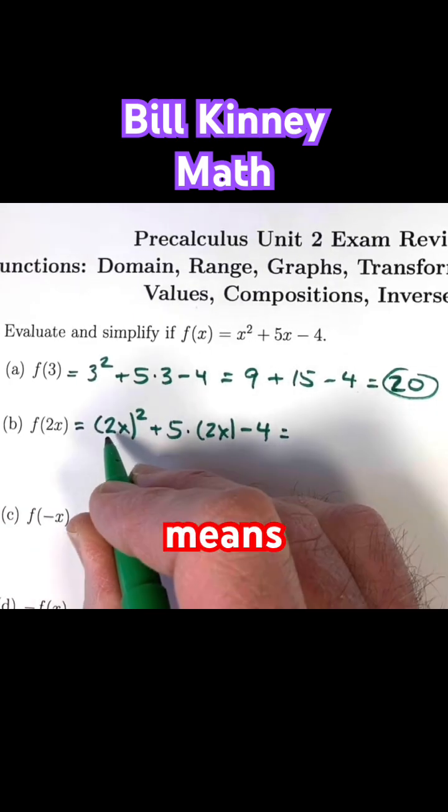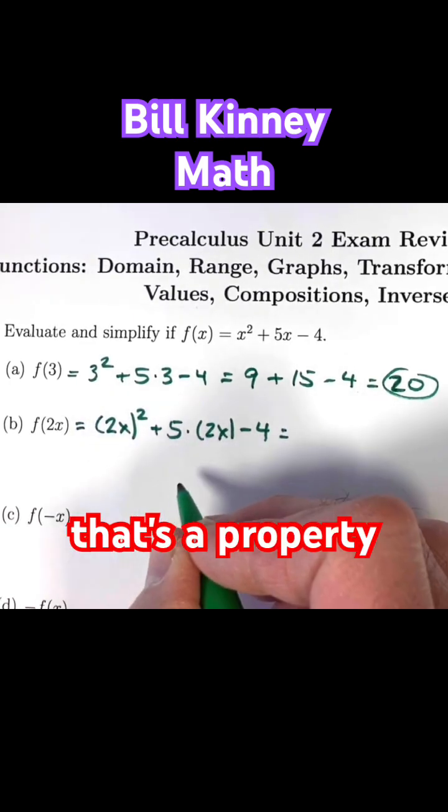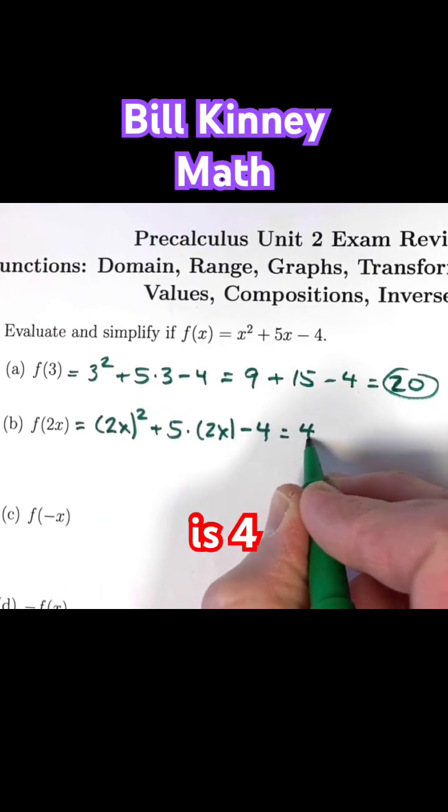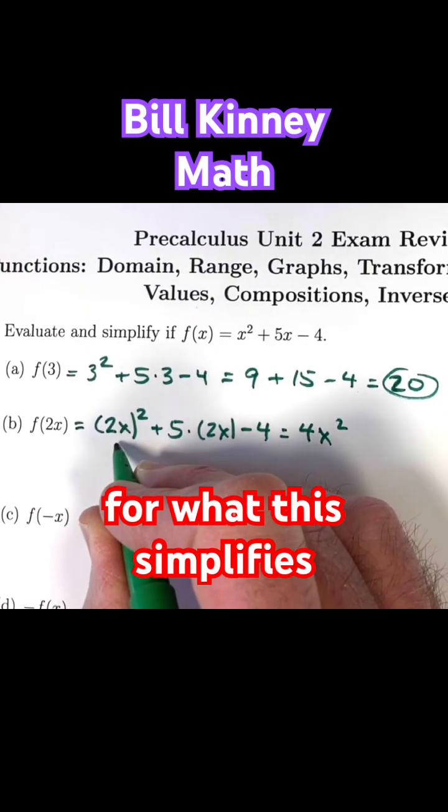2x quantity squared means 2 squared times x squared. That's a property of exponents. 2 squared is 4, so I get 4x squared for what this simplifies to.